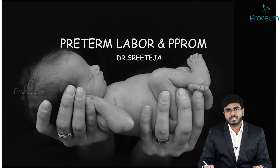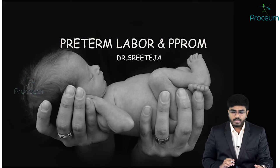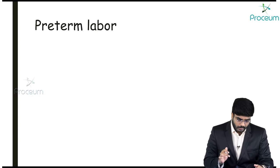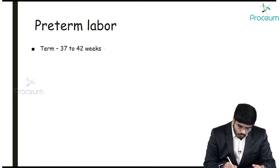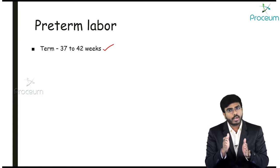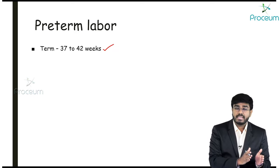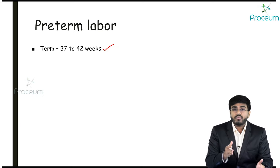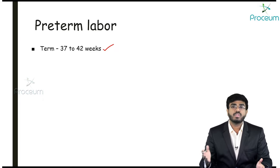Welcome back. In this video let's discuss preterm labor and preterm premature rupture of membranes. Before discussing preterm labor, let's define what term means. The usual term is the time period between 37 to 42 weeks. Before 37 weeks, if labor starts, it is known as preterm labor. After 42 weeks, it is post-term labor.